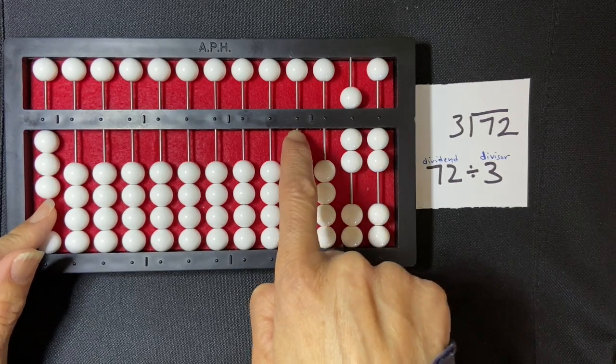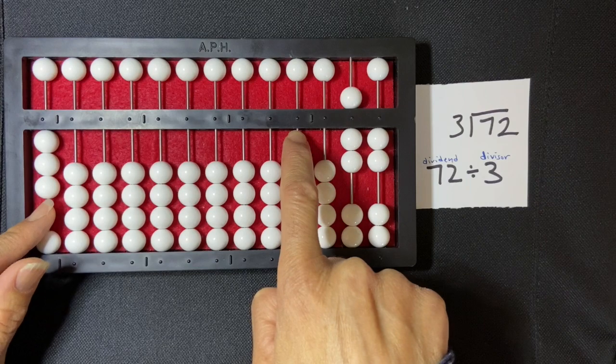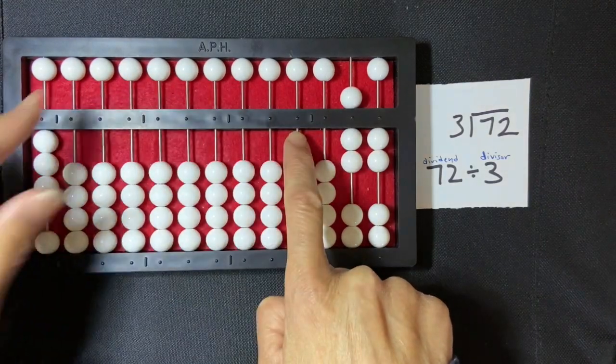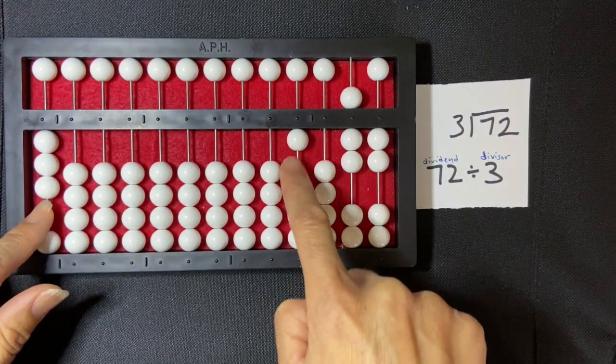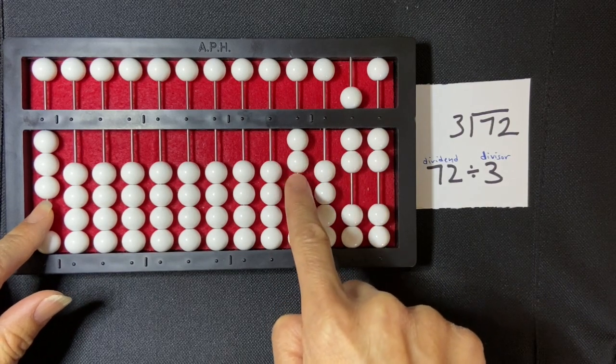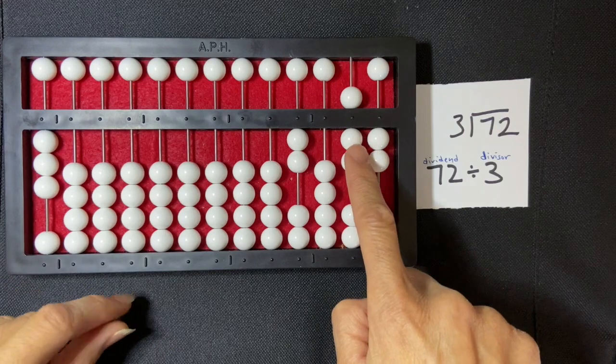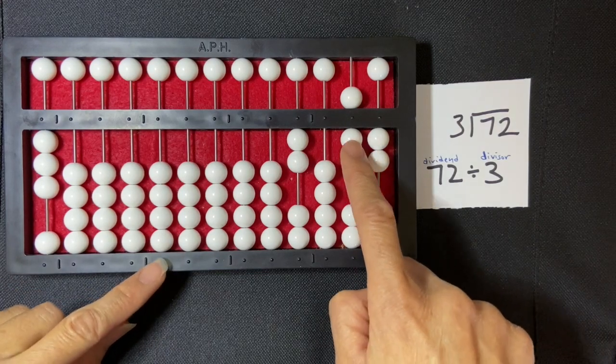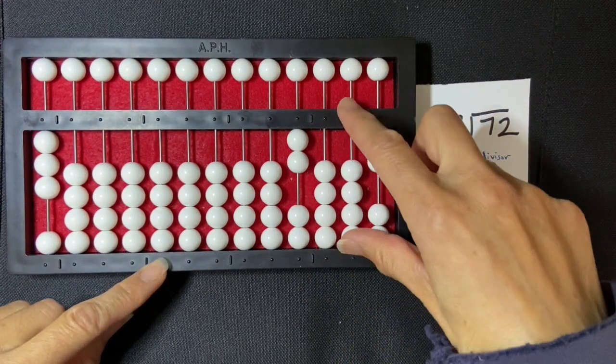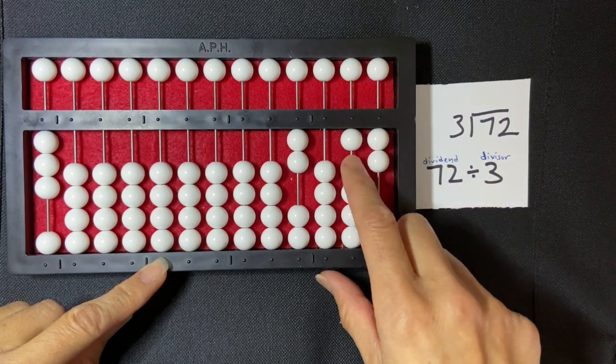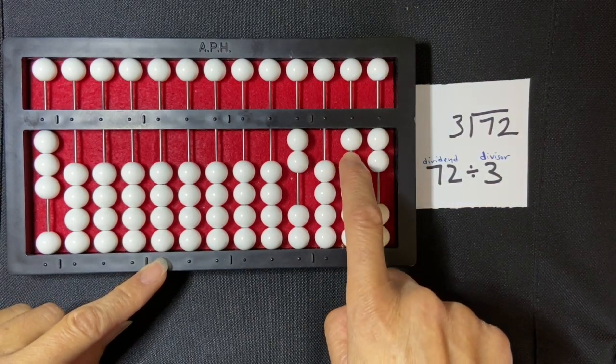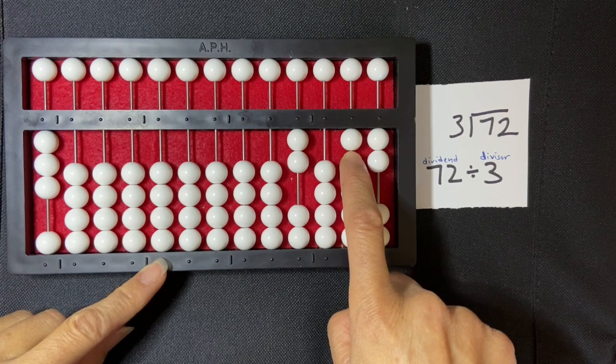So three goes into seven two times. One, two. And so two times three is six, so I'm going to subtract six from my seven. One, two, three, four, five, six. That leaves me with one in my tens column.